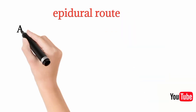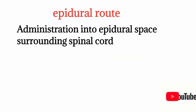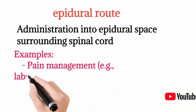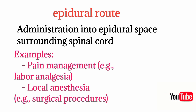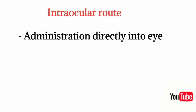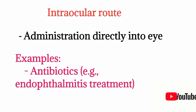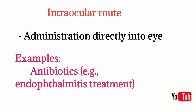The epidural route means giving the drug into the epidural space. The dura mater is a layer surrounding your spinal cord and brain, and just outside the dura mater is the epidural space. Examples include drugs given for pain management into the epidural space of the spinal cord — for example, for labor analgesia during child delivery, where various nerves can be blocked through this route. The intraocular route involves administration directly into the eye — for example, various antibiotics can be given for endophthalmitis treatment, which is an infection of the inner layer of the eye, by injecting antibiotics directly inside the eye.